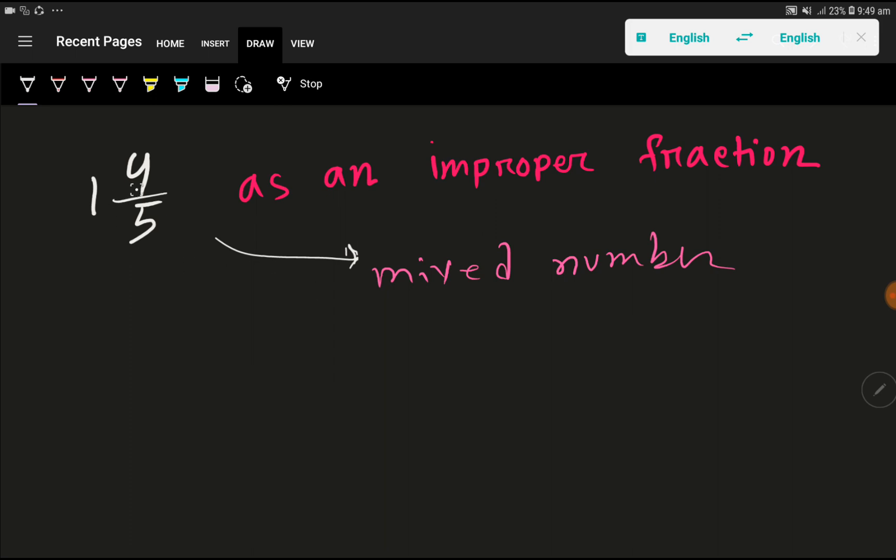To convert this mixed number to an improper fraction, first we multiply the whole number (1) by the denominator of the fraction, then we add the numerator, and then we place the same denominator.